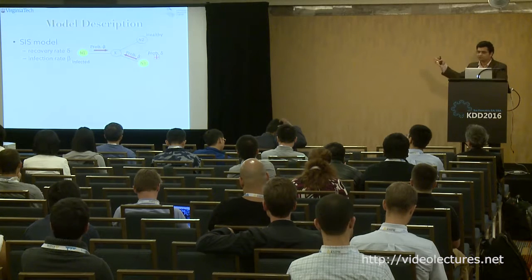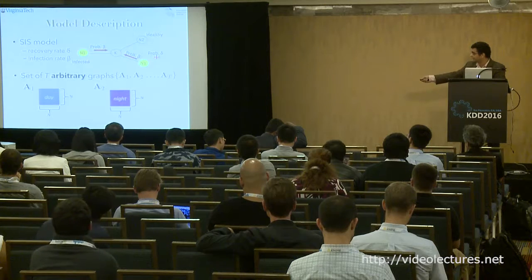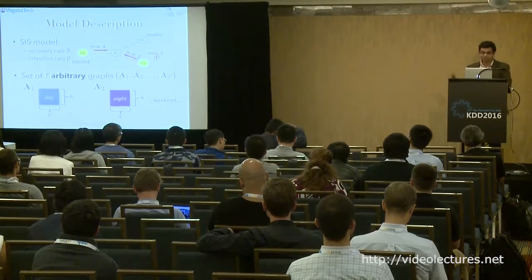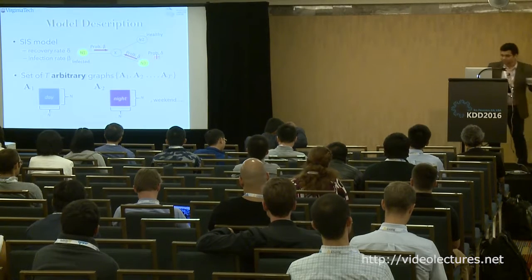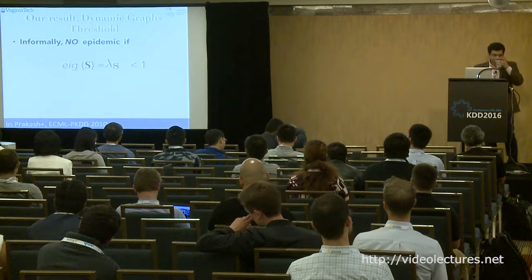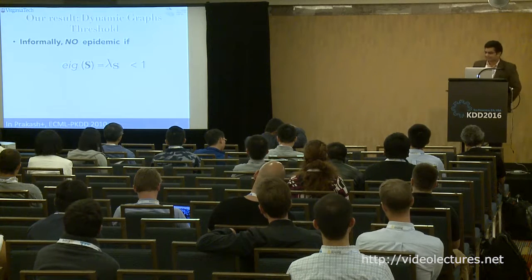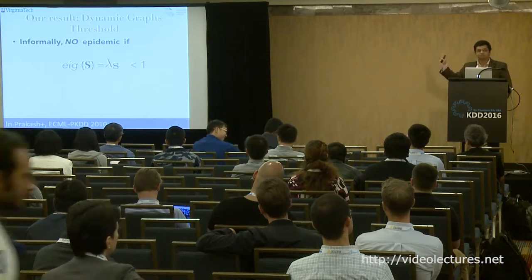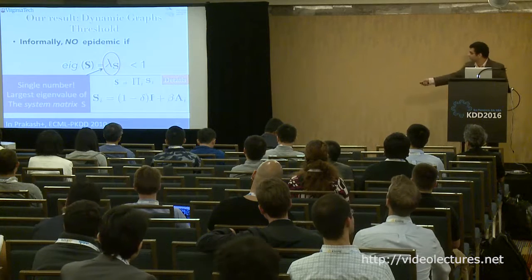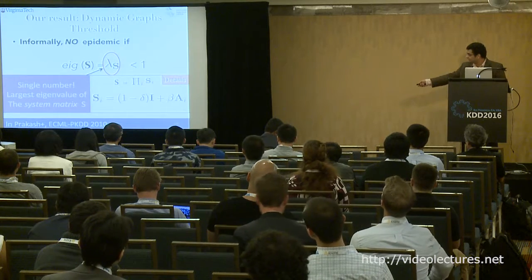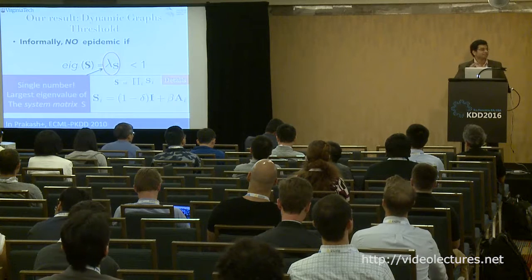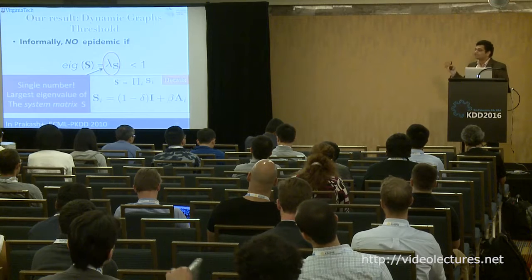For dynamic graphs, the question is: will an epidemic happen given this set of graphs — say a flu spreading on them? Using similar techniques, you get: there is no epidemic if the eigenvalue of a system matrix S is less than 1. The system matrix S is a product of Si matrices, where each Si is (I - delta_i + beta_i * A_i) — roughly a product of adjacency matrices. If the largest eigenvalue of that product is less than 1, there won't be an epidemic.